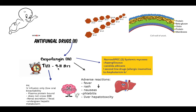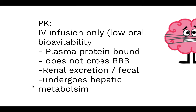The plasma half-life of Caspofungin is 9 to 11 hours. Just like Amphotericin B, Caspofungin is administered intravenously due to low oral bioavailability. It is very highly bound to plasma proteins, does not cross the blood-brain barrier, is excreted both renally and fecally, and undergoes slow metabolism by hepatocytes.